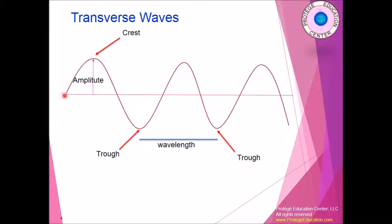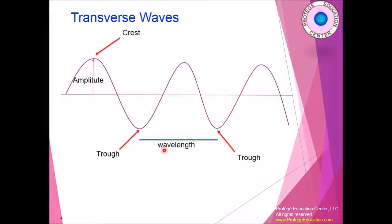You start the wave from the resting position; it goes up and then comes back down. The distance from the resting position to the crest is called amplitude. The distance between two troughs is called wavelength. So this is the wavelength we talk about when discussing waves.